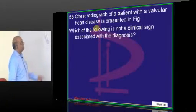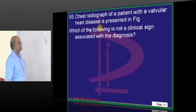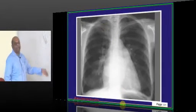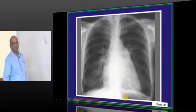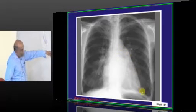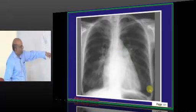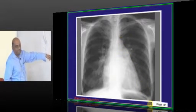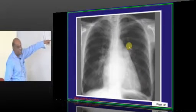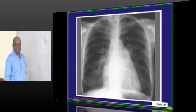In valvular heart disease, a chest radiograph is presented to you. What you see is straightening of the left heart border, which occurs whenever pulmonary hypertension develops. Pulmonary hypertension is the feature of which valvular heart disease? Mitral stenosis.